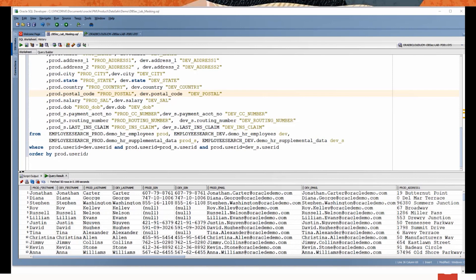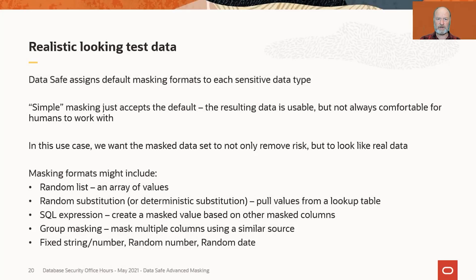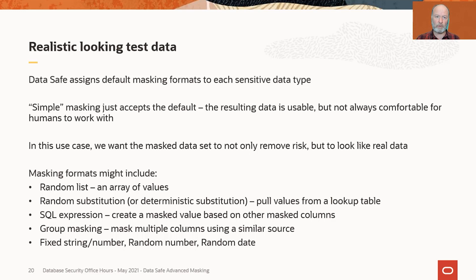Let's look at our third and final advanced use case. This one is not an edge use case — this one is very, very common. Here we're going to talk about producing more realistic looking test data. DataSafe assigns a default masking format to every sensitive data type. Simple masking just accepts the default, and the resulting data is secure — you've removed the risk from it — but it's not always pretty. Names look a little odd with just a bunch of different characters in there. If you're masking a database for user acceptance testing or training scenarios, you might want data that looks more realistic.